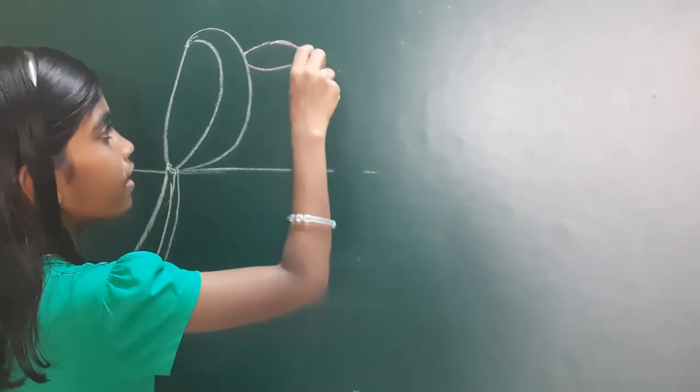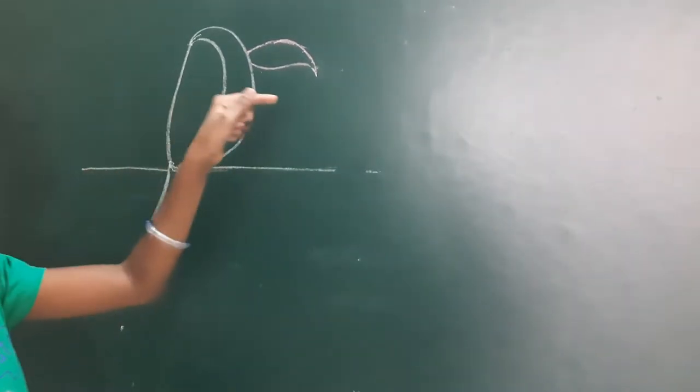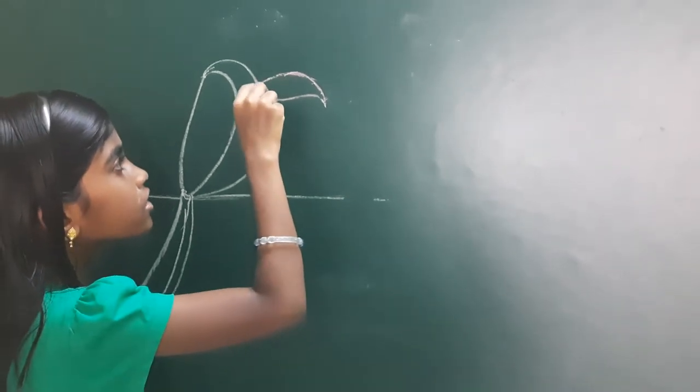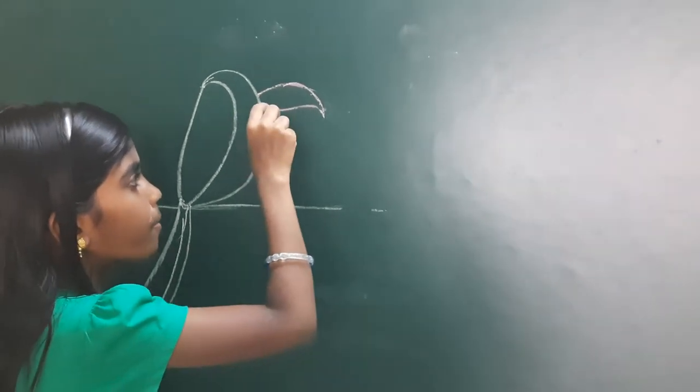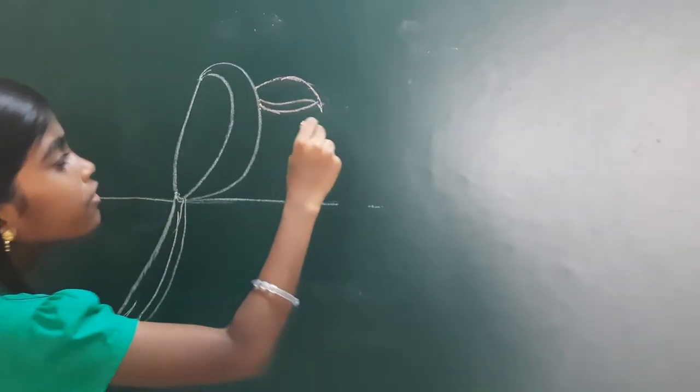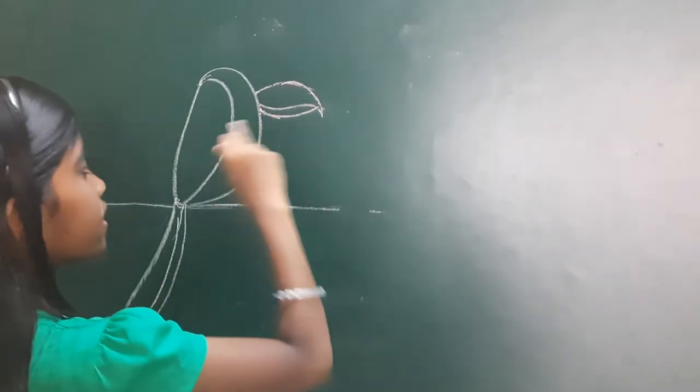Then you want to make the beak a little like this. Now you want to just leave like a little gap and bring it over here. Then if you don't want this extra place, you can now erase this. You can make the beak smaller or bigger according to your bird.